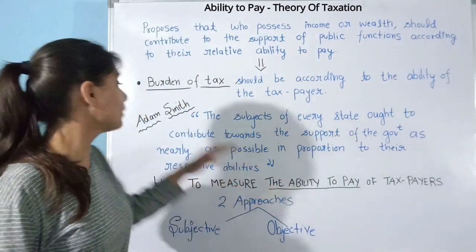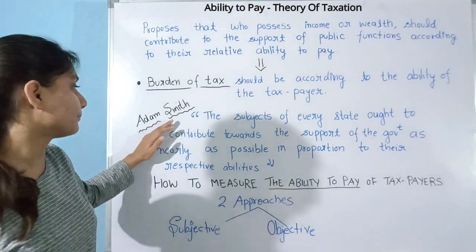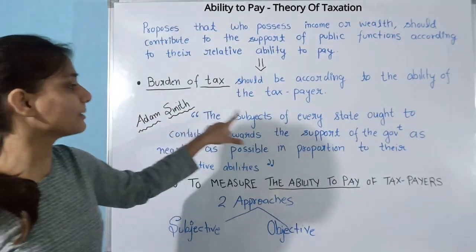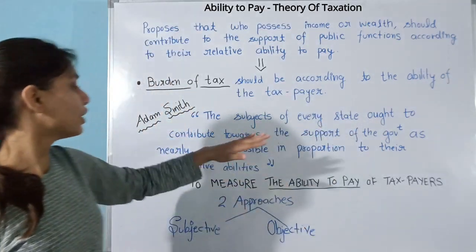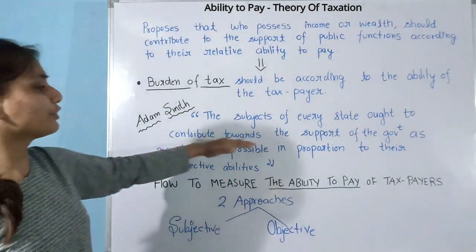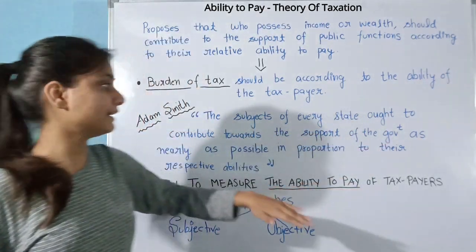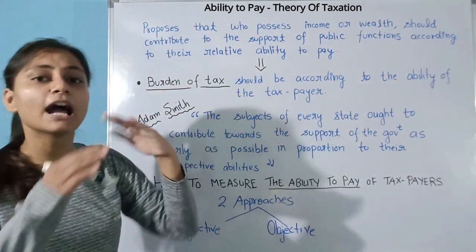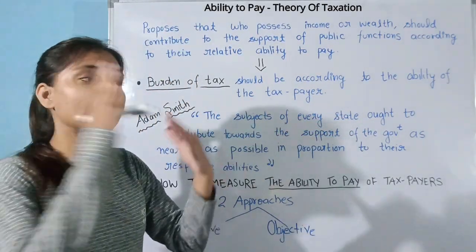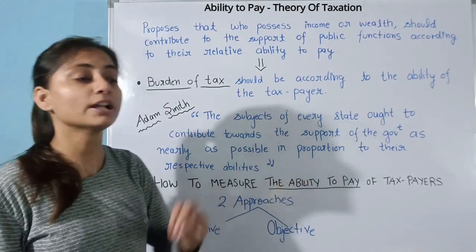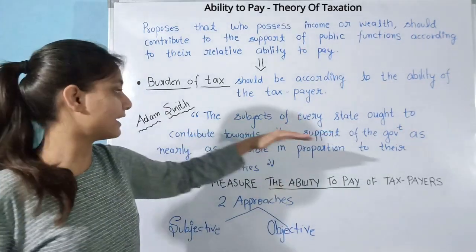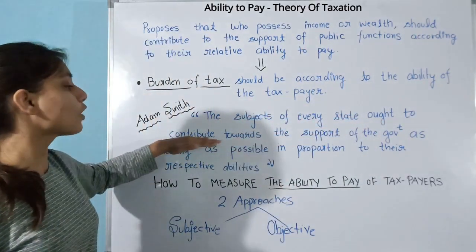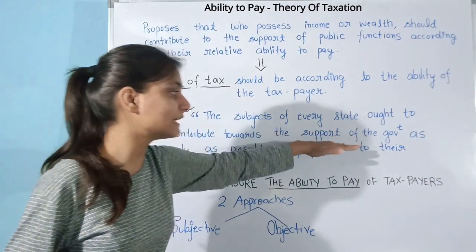Now let's see what Adam Smith put forth. He writes that the subjects of every state ought to contribute towards the support of the government — that is, all citizens living in the state should contribute towards supporting the government.